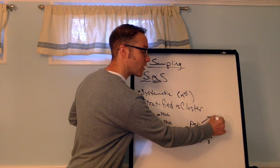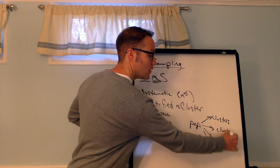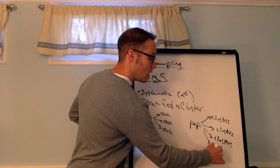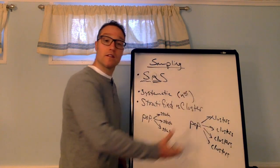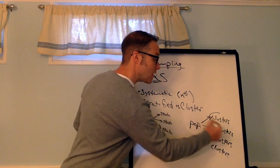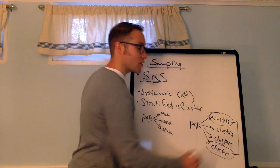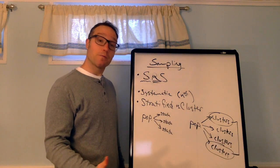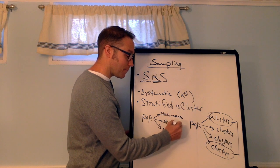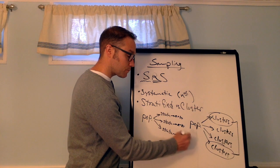So I take the population and I don't split it, but I view it as different clusters. So maybe these are zip codes or something. I want to study residents of New York. And I look at all the different zip codes or counties or something like that. And I randomly select this cluster and this cluster. And all individuals in those clusters become my sample.